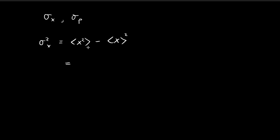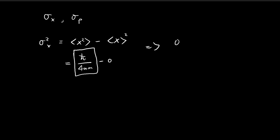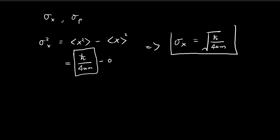In the previous videos, we found that the expected value of x squared is equal to ℏ divided by 4am, and the expected value of x is just equal to 0. So the variance is just equal to the expected value of x squared, which implies that the standard deviation of x is equal to the square root of ℏ divided by 4am.